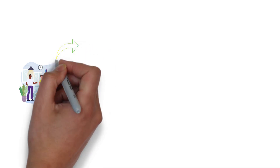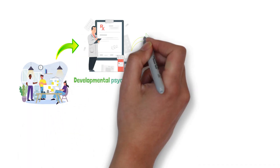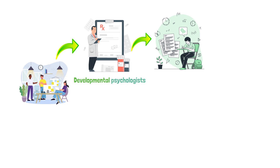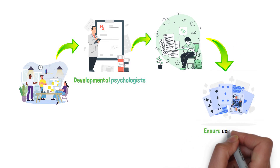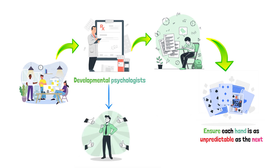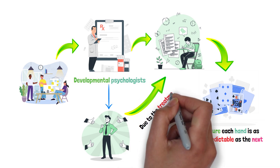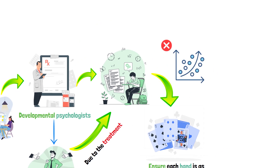When it comes to assigning participants to treatment conditions, developmental psychologists often rely on random assignment. This is like shuffling a deck of cards to ensure each hand is as unpredictable as the next. By doing this, researchers can be more confident that any differences observed are due to the treatment and not some other variation.